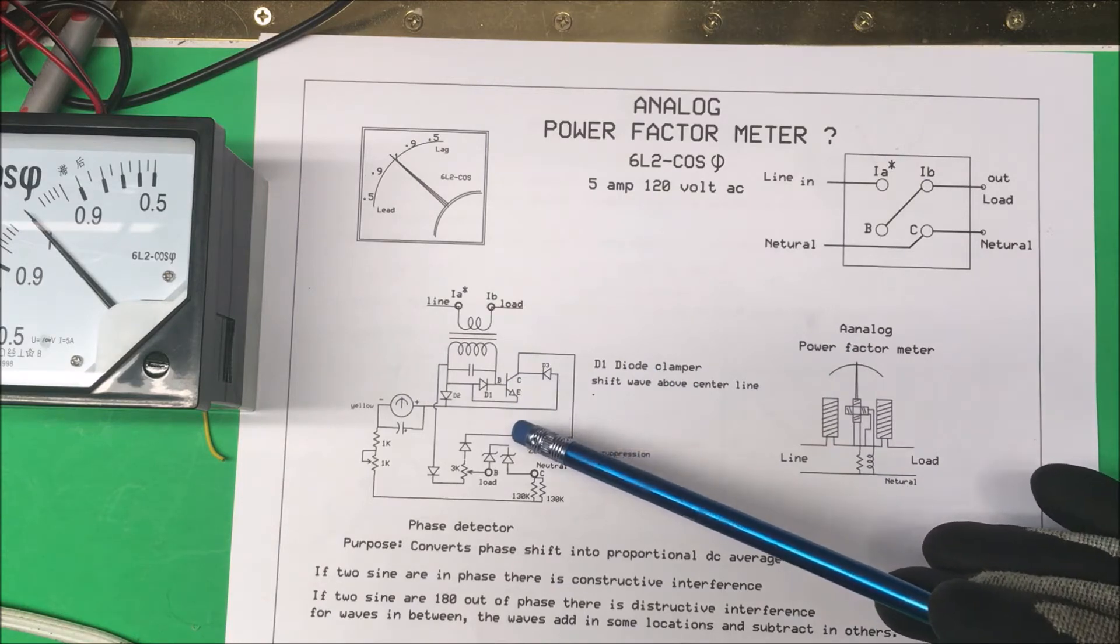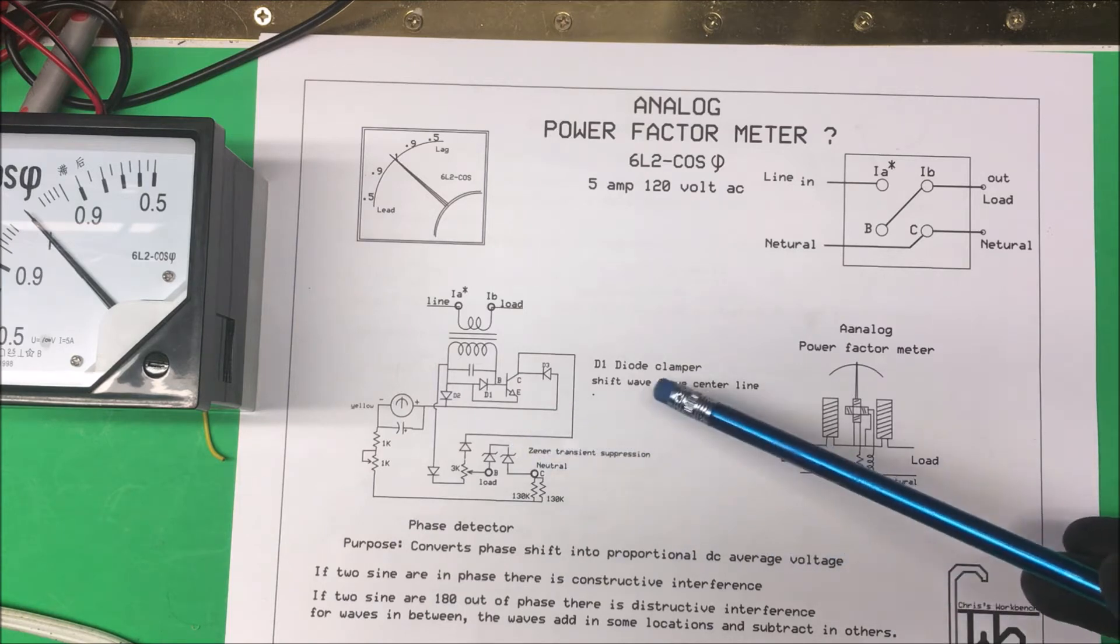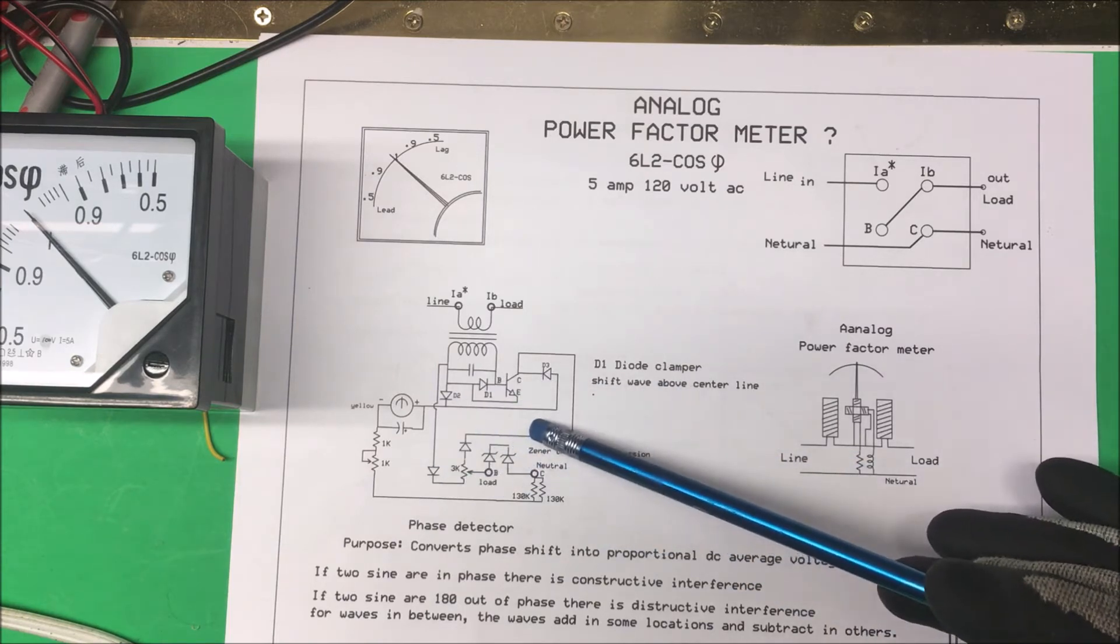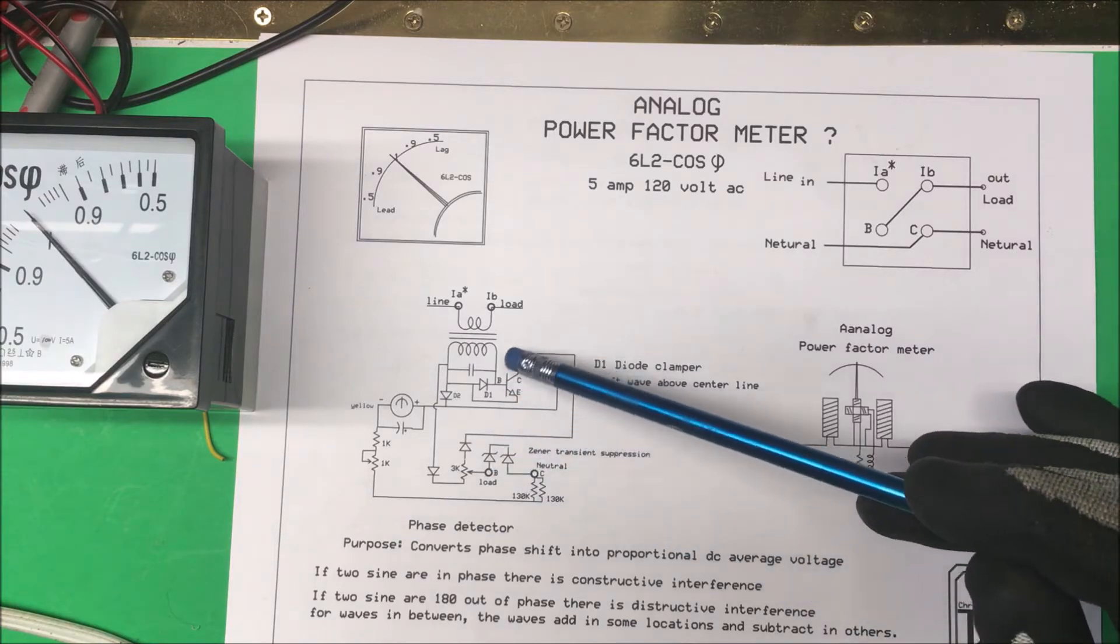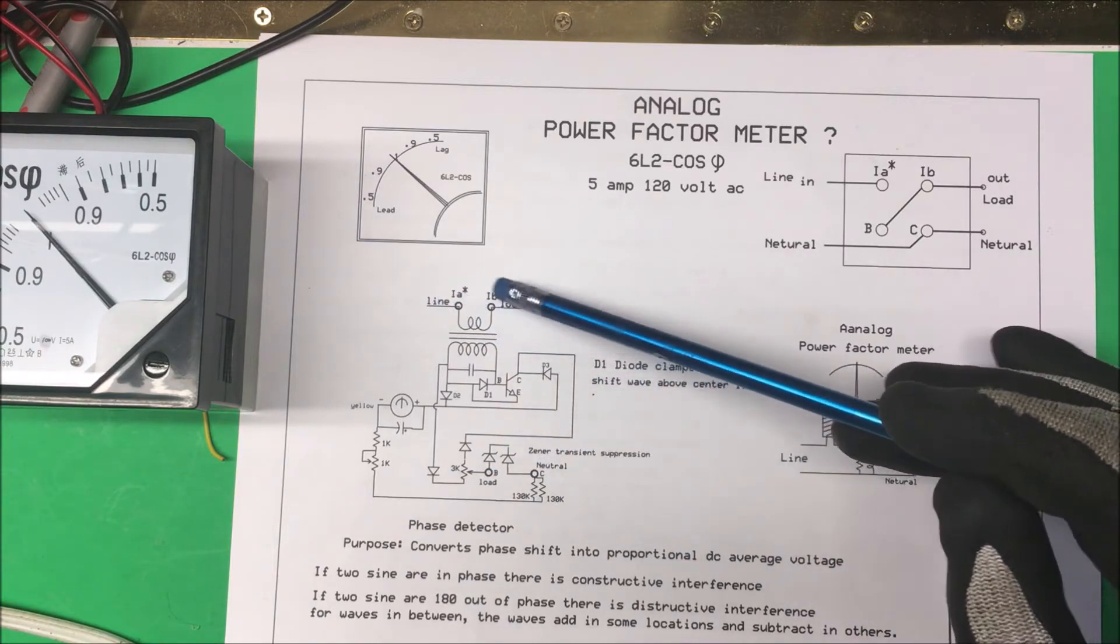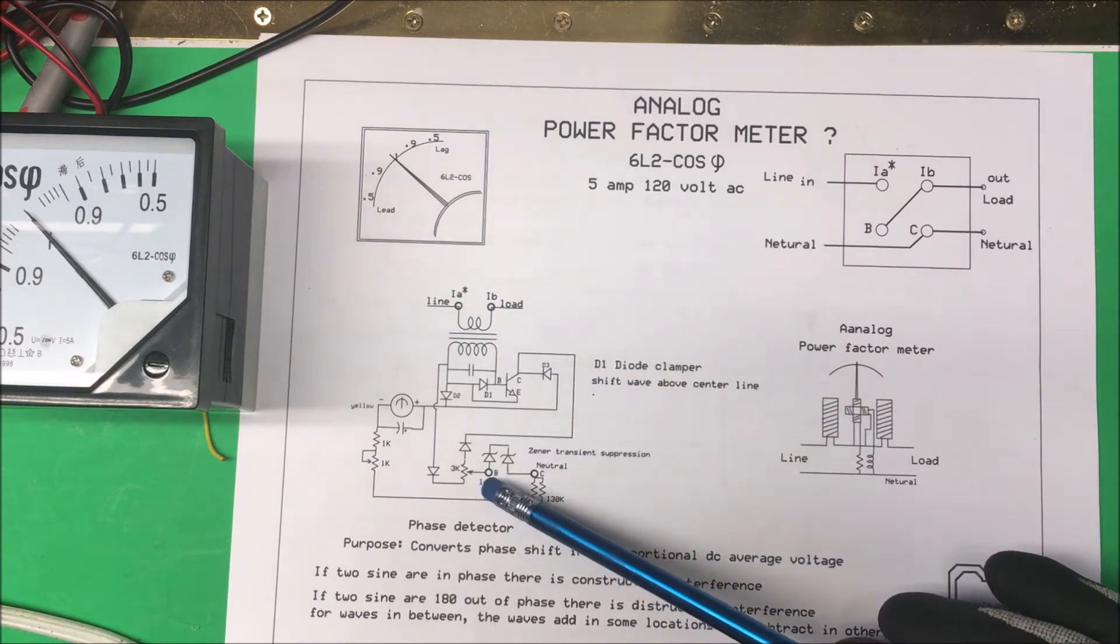The reason it only goes in one way is because this thing's not really a power factor meter but it's a phase detector. This is more of a phase detector circuit and what it does is it just takes the two, the current.